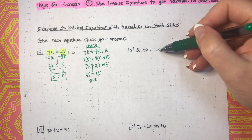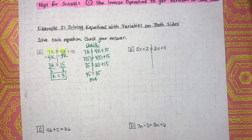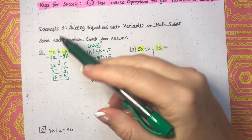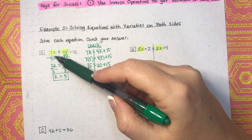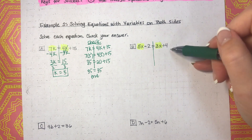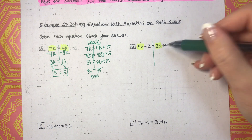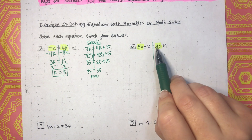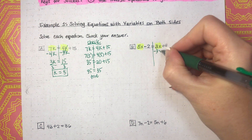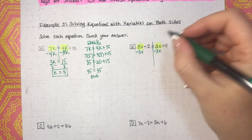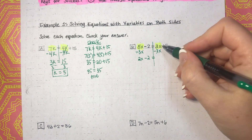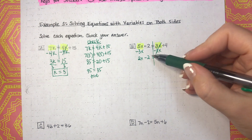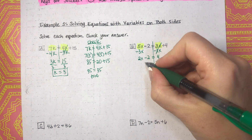Next we have 5x minus 2 equals 3x plus 4. The equal sign splits the equation into two sides, with a variable on each side. Since there's a lot going on on both sides, we're going to get the variables on the same side first by moving the smaller one. Out of 5x and 3x, 3x is smaller. So we use the inverse operation — 3x is positive, so we subtract 3x from both sides. Then we need to get rid of the minus 2, so we add 2 to both sides.